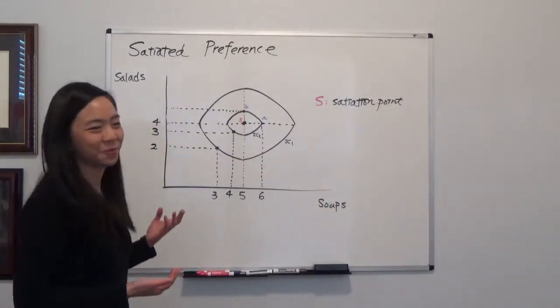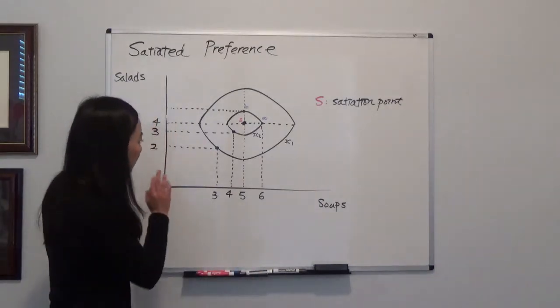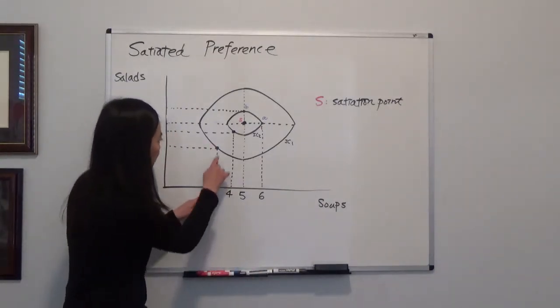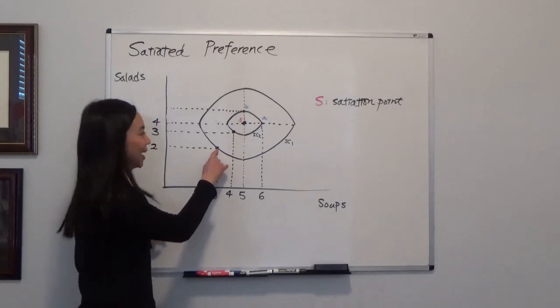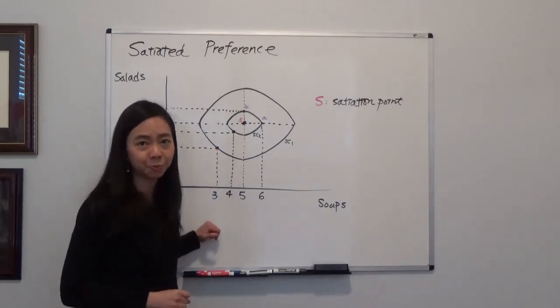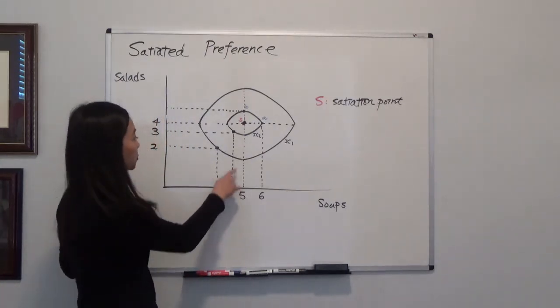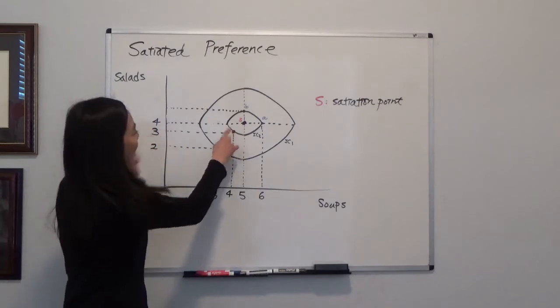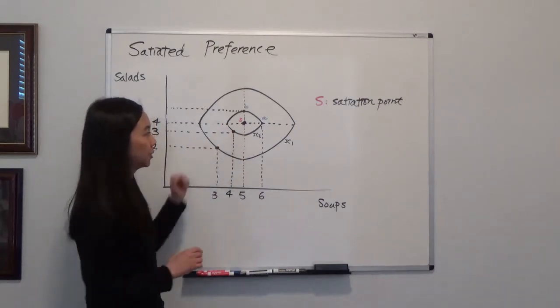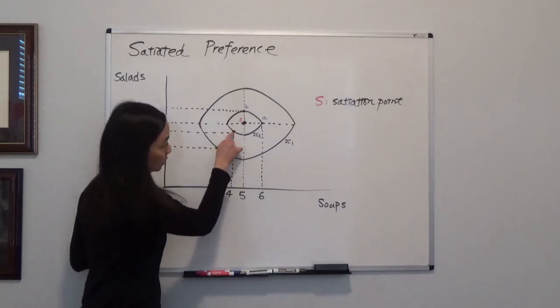We all make a kind of mistake, sometimes we eat too much. Suppose your utility level for three soups and two salads is here. And at the time you feel that you want to have a little bit more soup and salad, so you help yourself with one more soup and also one more salad. Now your utility has increased from IC1 to IC2. So your utility has increased.